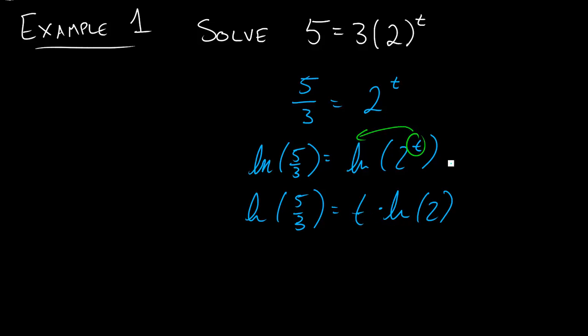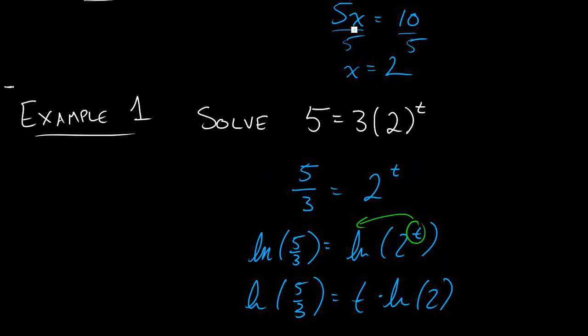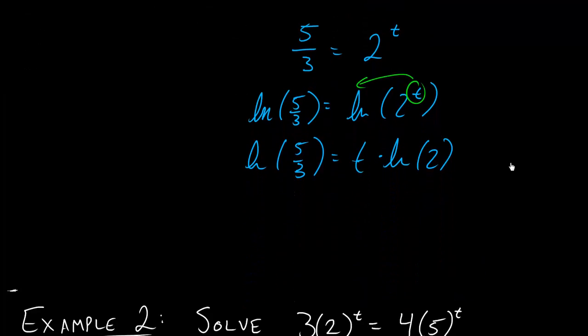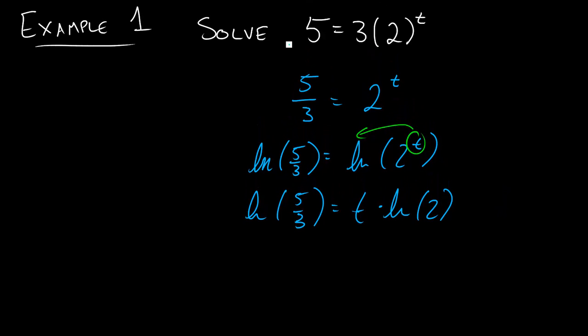Well, now this is kind of like that equation we had up here. When we had 5x = 10, we have t times some number equals some number. Remember that these ln are just numbers. And so to solve for t, all we need to do is divide each side by ln of 2, and we'll get t equals the ln of 5/3 divided by ln of 2. And so if you type this into your calculator, you'll see that t is about equal to 0.737.